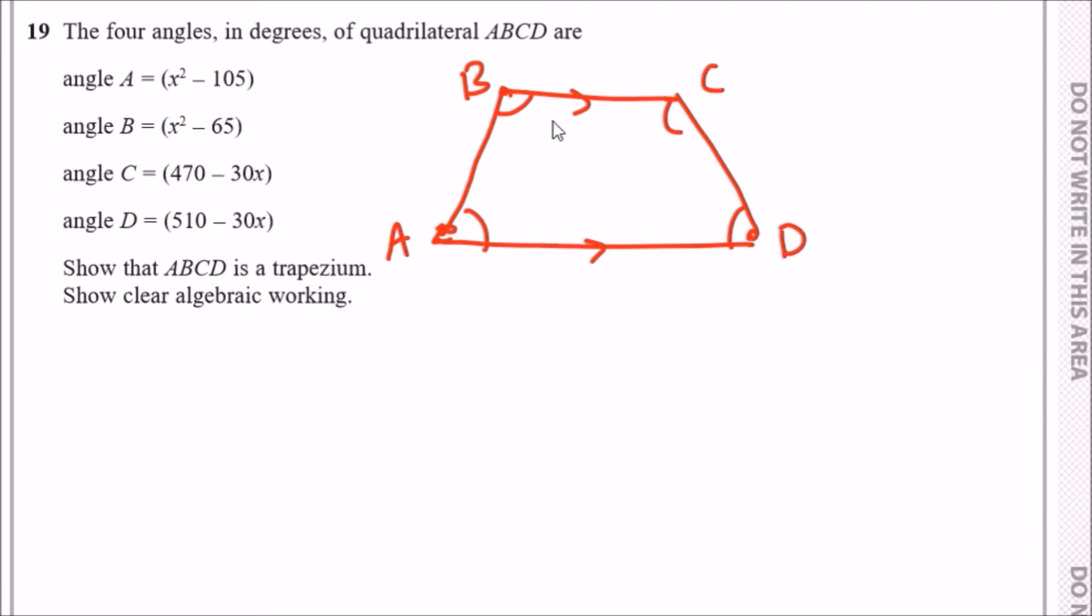A trapezium has two parallel sides, and the sum of its supplementary angles must equal 180 degrees around the parallel line. For example, angle A plus angle B must equal 180, and same for C and D. We need to find a combination here that equals 180 for two angles and 180 for the other two.